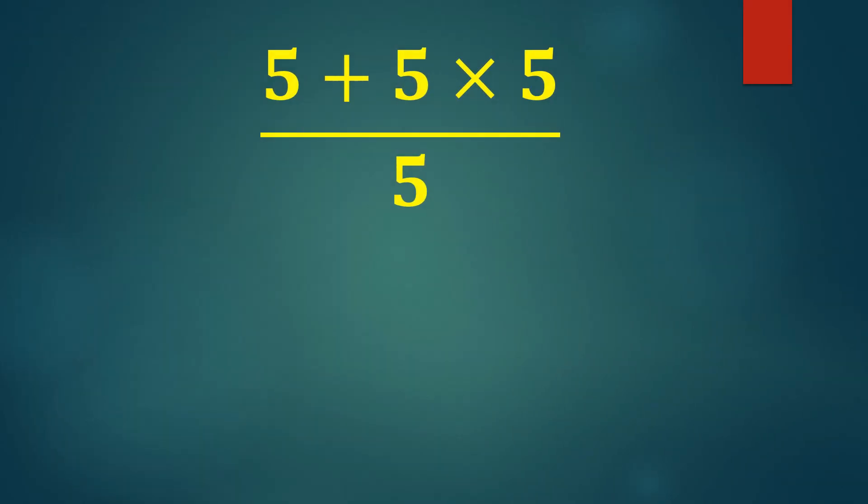Many people start with this approach. They begin by adding first, 5 plus 5 equals 10. Then they multiply by 5, and finally divide by 5. In other words, they take 10 and multiply it by 5.